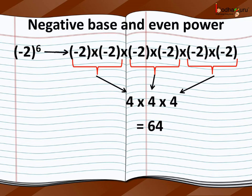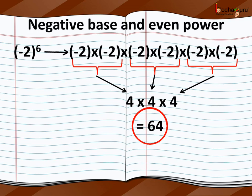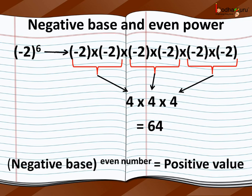For example, here it would be equal to 4 multiplied by 4 multiplied by 4, which is equal to 64, a positive number. So, remember children: a negative base to the power of an even number results in a positive value only.